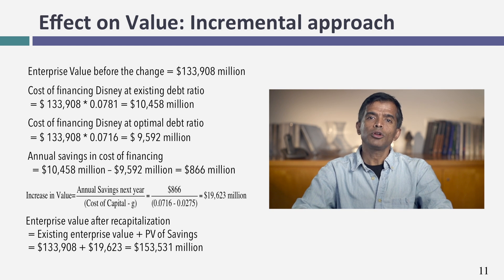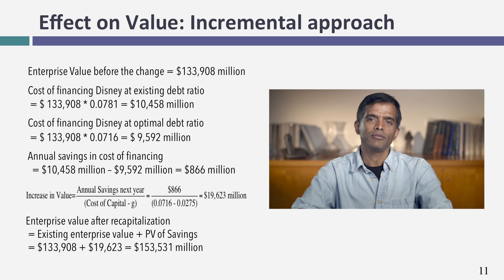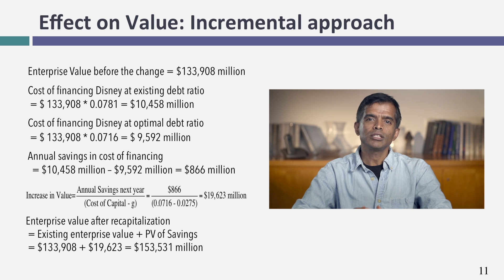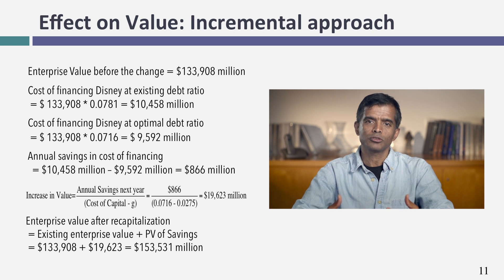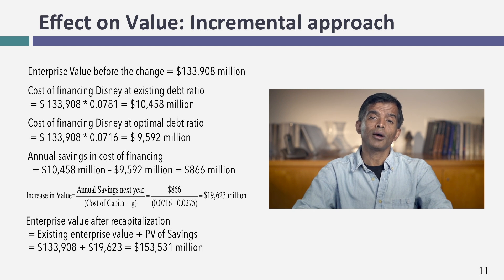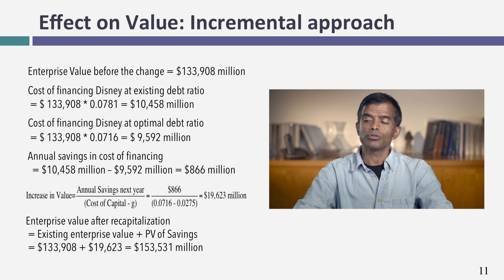Rather than assuming the $866 million in savings grows at the 4.94% implied rate, I assume it grows at the risk-free rate. The risk-free rate is a reasonable proxy for the nominal growth rate of the economy — both embed expected inflation and expected real rates. Using 2.75% as the perpetuity growth rate, with $866 million in savings and a 7.16% cost of capital, I get an increase in value of $19.6 billion. That, I think, is a more realistic assessment of what happens by moving to the optimal.